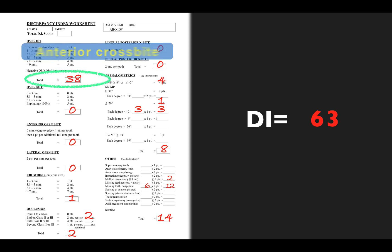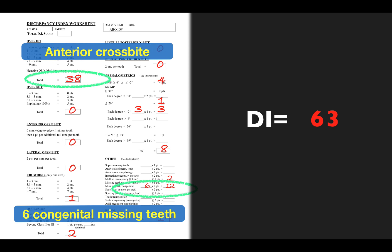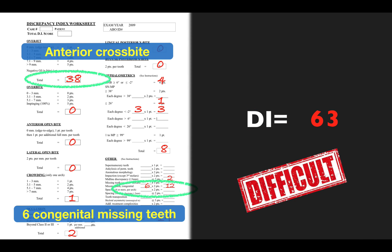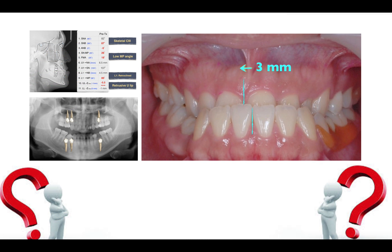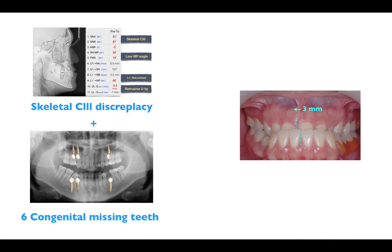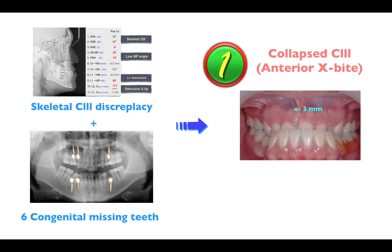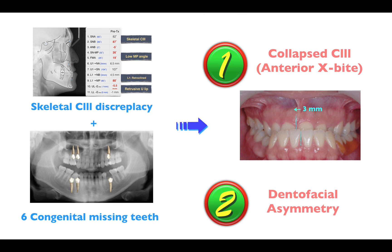Most deductions were from the anterior crossbite and six congenitally missing teeth. Is the case difficult? Of course it's insanely difficult. In summary, the skeletal Class 3 discrepancy combined with six congenitally missing teeth resulted in Class 3 occlusion and dental facial asymmetry. In the following, I will tell you how to fix these two problems.